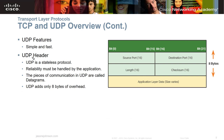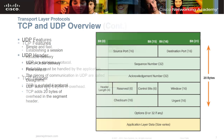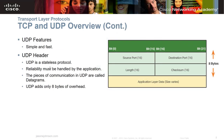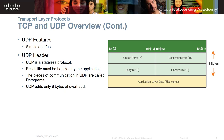UDP is simple, fast, and streamlined. It is a stateless protocol — remember, TCP is stateful and UDP is stateless. Reliability must be handled by the application layer. The pieces of communication in UDP are called datagrams, and UDP adds only 8 bytes of overhead, compared to TCP's 20 bytes. That's the reason we use UDP — it's simple, fast, and has less overhead.